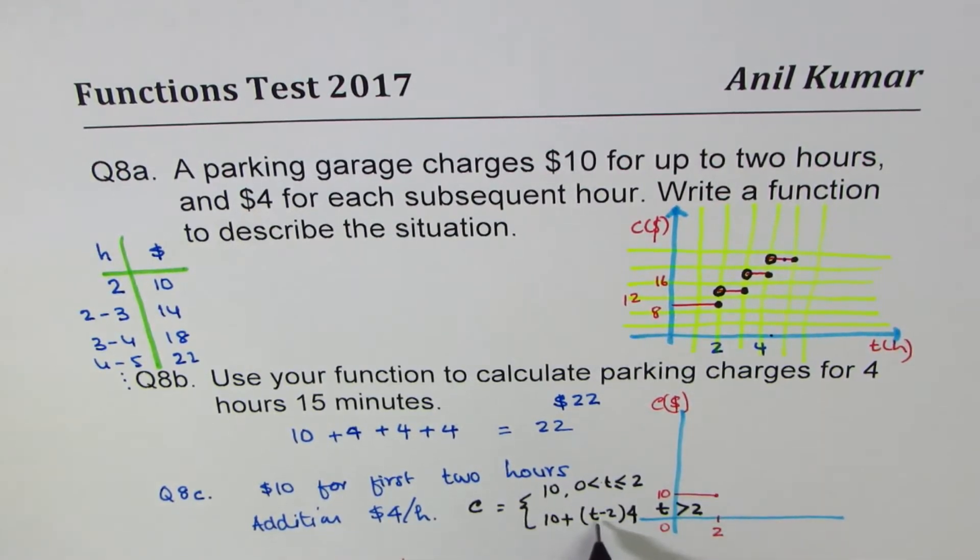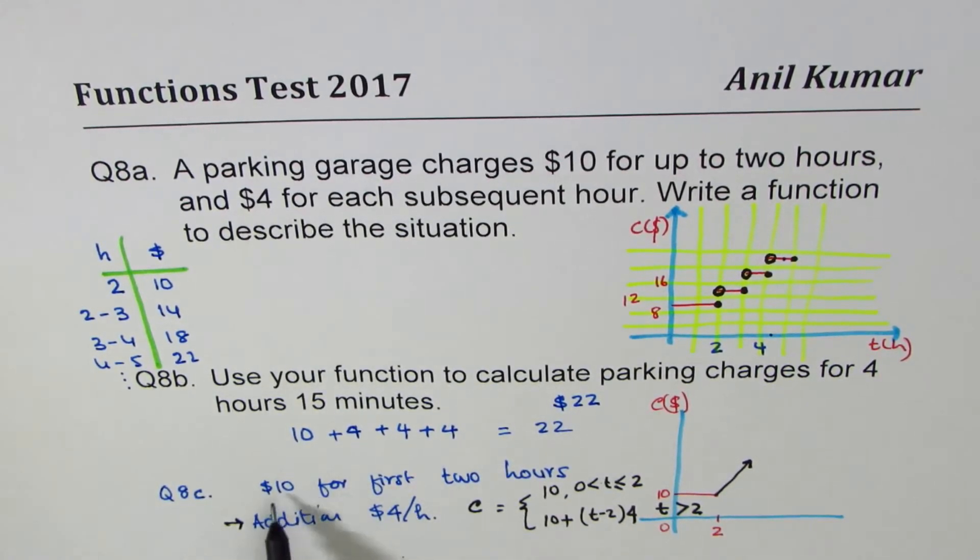This is for time which is greater than 2. So if I substitute 2 here, this part is 0. So for the next hour, it will go by 4, so it will be kind of a function like this. Now, that will be a function which will be a continuous function. And this will be if the condition is $10 for first two hours, an additional $4 per hour. It becomes continuous.